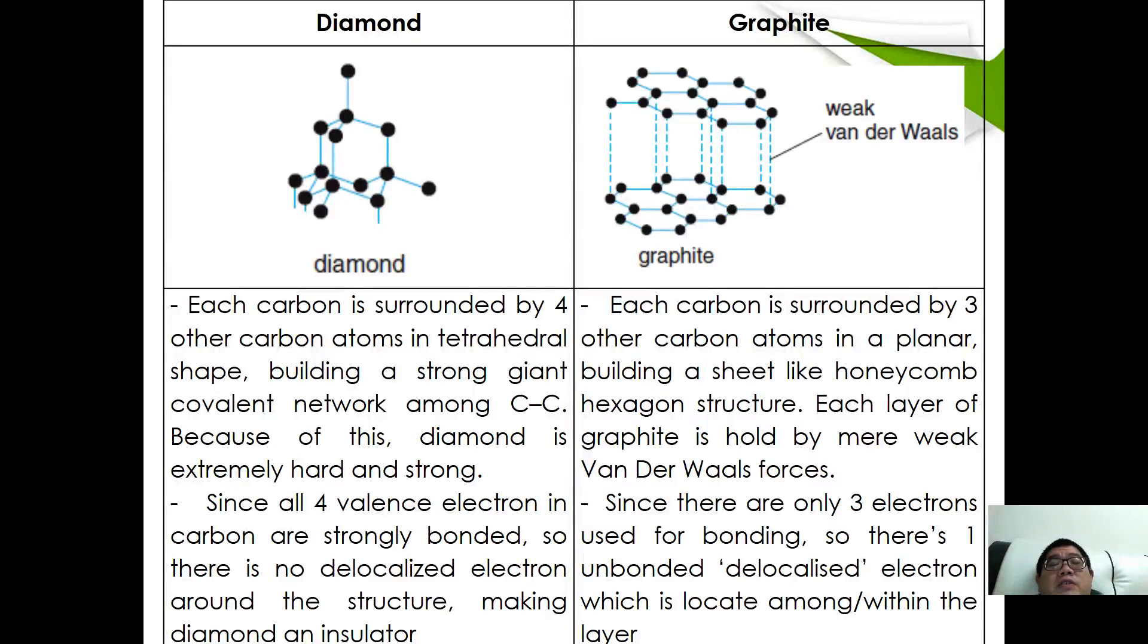These are the comparisons between diamond and graphite. In diamond, each carbon is surrounded by 4 other carbon atoms in tetrahedral shape, building a strong giant covalent network among the carbon-carbon bonds. Because of this, diamond is actually hard and strong. Whereas in graphite, each carbon is surrounded by 3 other carbon atoms in a planar structure, building a sheet-like honeycomb hexagonal structure. Each layer of graphite is held by very weak Van der Waals forces.